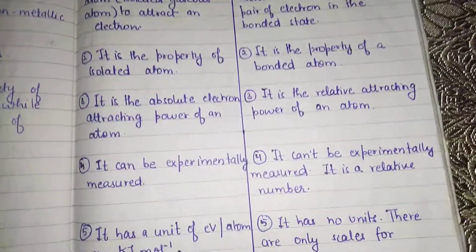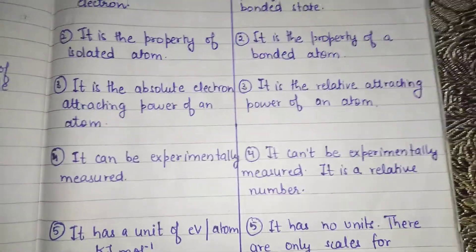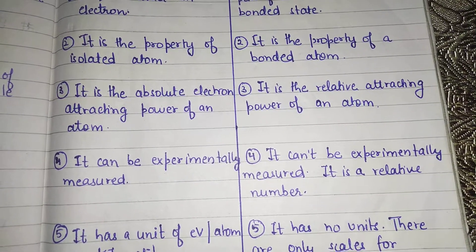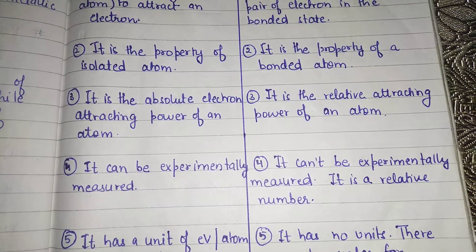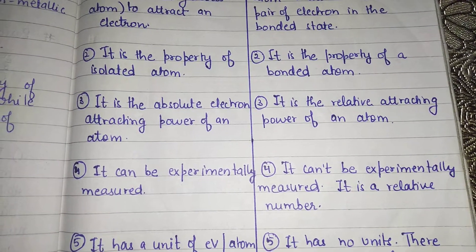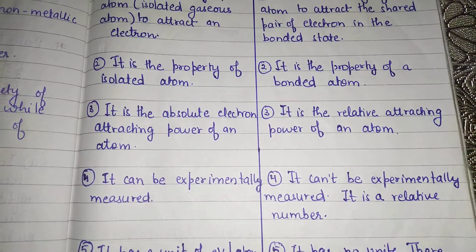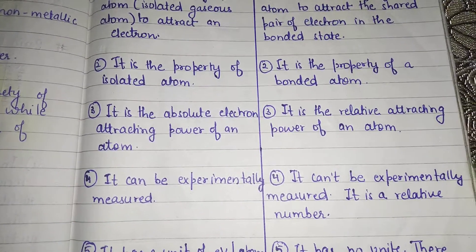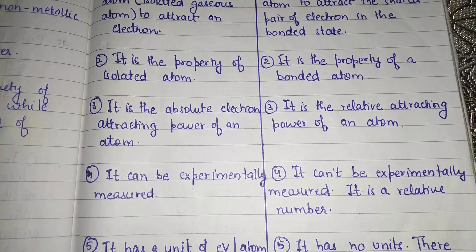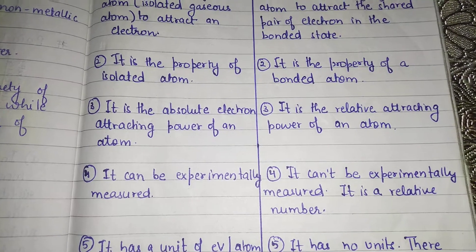The fourth difference is that electron gain enthalpy can be experimentally measured. However, electronegativity cannot be experimentally measured — it is a relative number, because it depends upon the bonding: how and what kind of bonding is taking place. Every time a different kind of bond may be formed, and there can be different elements with different numbers of bonds.